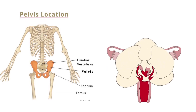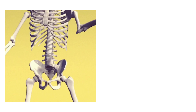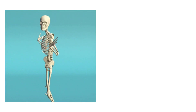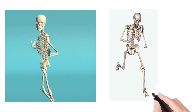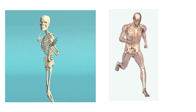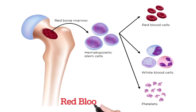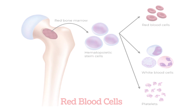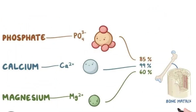Along with the protection of internal organs, bones also help in various movements — the radius, ulna, humerus, tibia, and fibula are the hand and leg bones which help in movement. The bones also contain bone marrow which helps in the production of red blood cells, and they help in the storage of minerals like calcium and phosphorus.